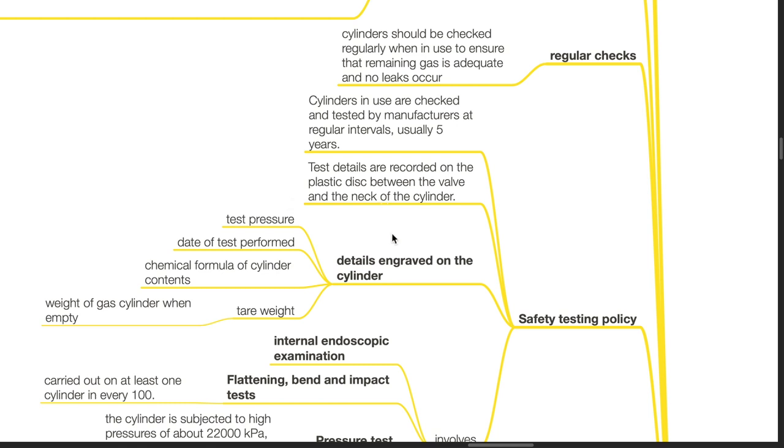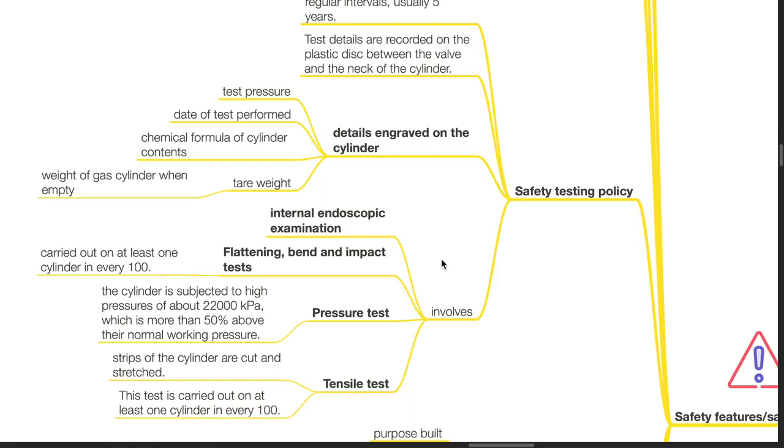Details engraved on the cylinder includes test pressure, date of test performed, chemical formula of the cylinder contents and tare weight which is the weight of the gas cylinder when empty. Safety testing involves internal endoscopic examination, flattening, bend and impact test carried out on at least one cylinder in every 100, pressure test where the cylinder is subject to high pressures of about 22,000 kPa which is more than 50% above their normal working pressure, and tensile test where strips of the cylinder are cut and stretched. This test is carried out on at least one cylinder in every 100.